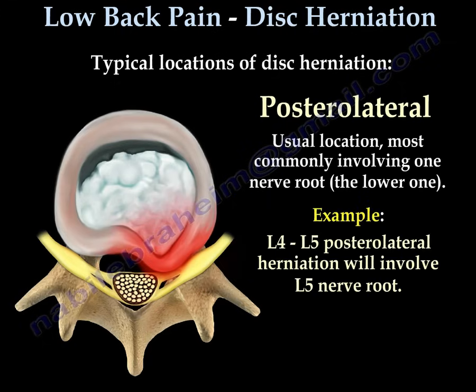The second location is posterolateral — usually the most common location. It involves one nerve root, the lower one. For example, an L4-L5 herniation will involve the L5 nerve root.